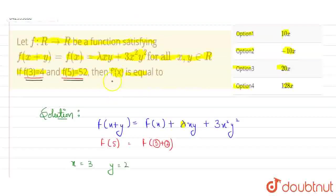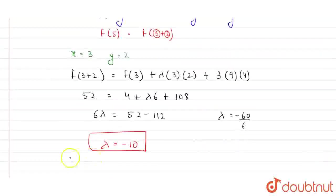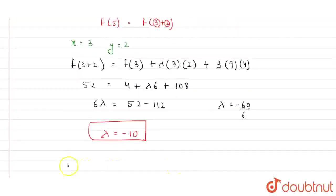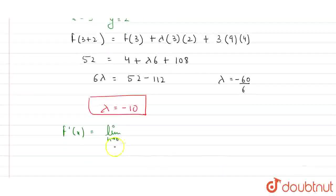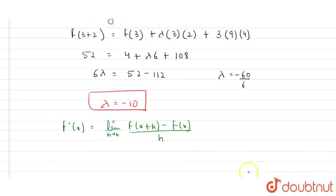Now, what do we have to find? We have to find the f dash x. So, in order to find the value of f dash x, we have a formula. f dash x is equals to limit h tends to 0, f of x plus h minus f of x divided by h. This is a formula, we know this.